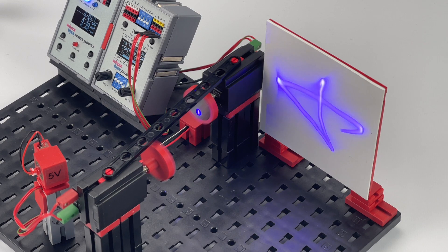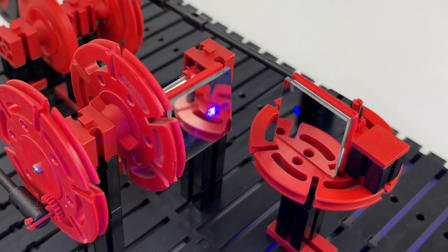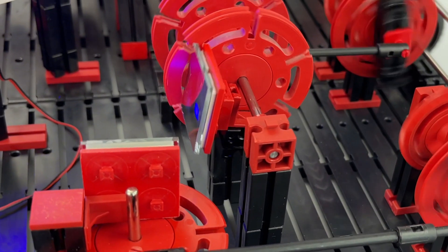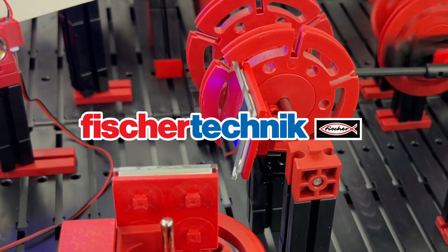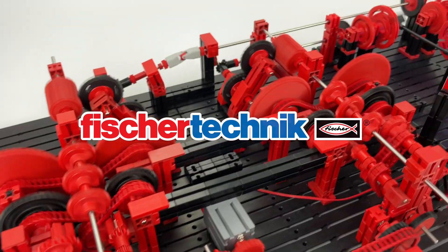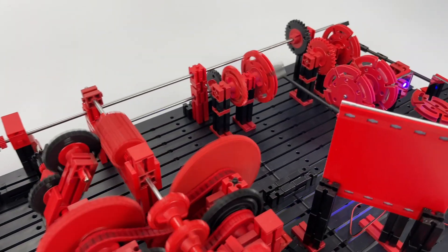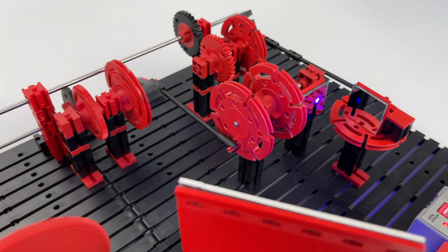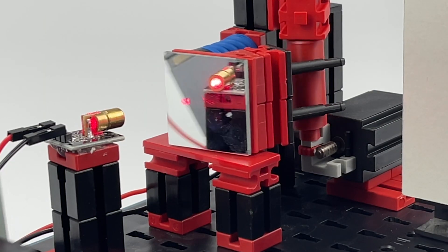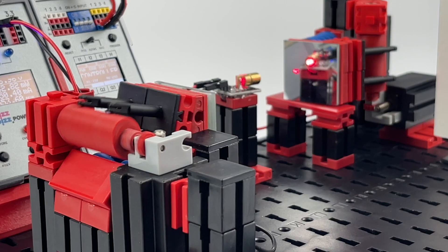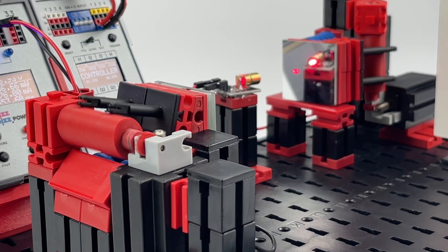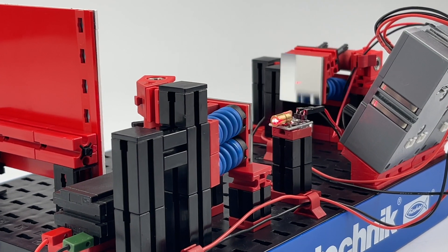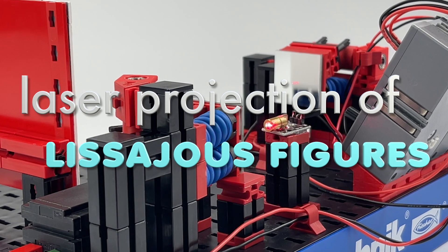But what if we don't spin the mirrors but let each mirror vibrate only about one axis? I took my six-speed gearbox made from Fischer Technique again and replaced the two revolving mirrors on the output side with mirrors that each deflect only one axis. One for the deflection of the laser along the x-axis and another one to deflect along the y-axis. If we do so we're able to project Lissajous figures!